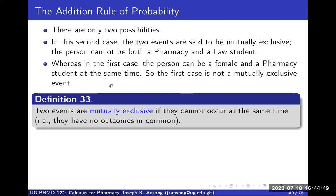We say that two events are mutually exclusive if they cannot occur at the same time — in other words, they have no outcomes in common. If they are mutually exclusive and you want the probability of one or the other, you can find the probability of one and just add it to the other without worrying about an outcome common to both. That is the advantage of knowing this.